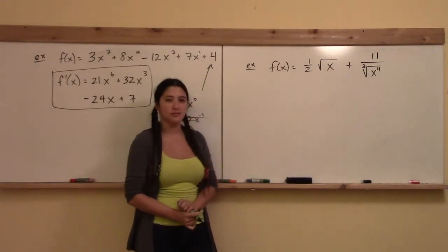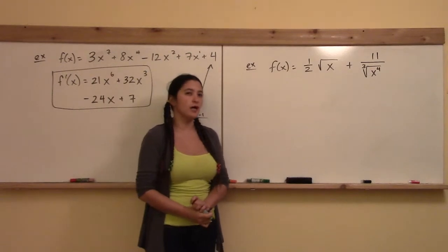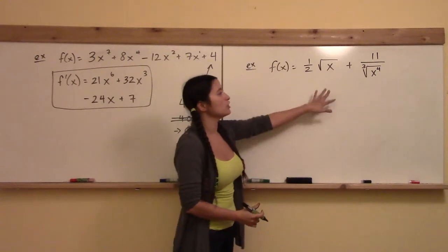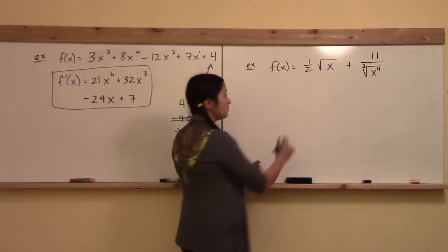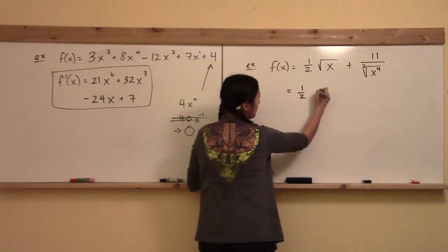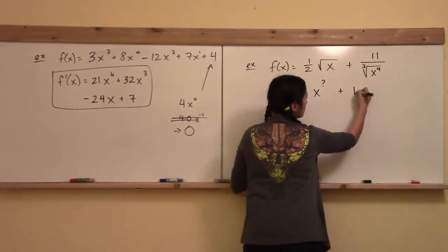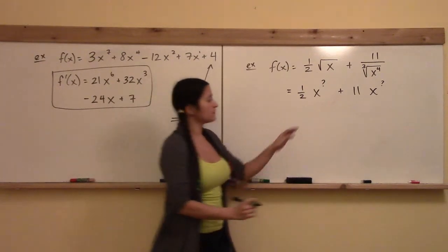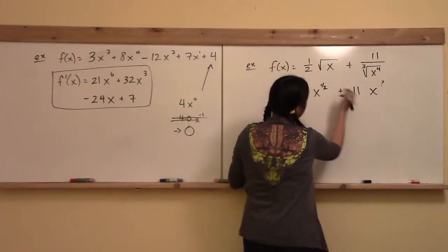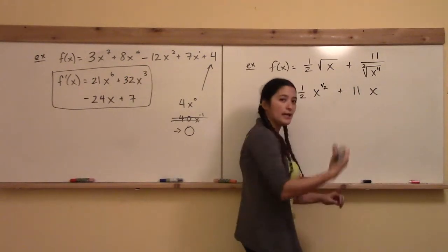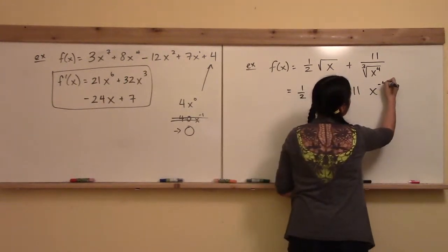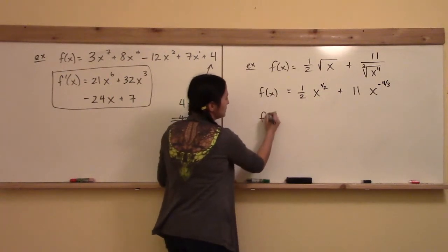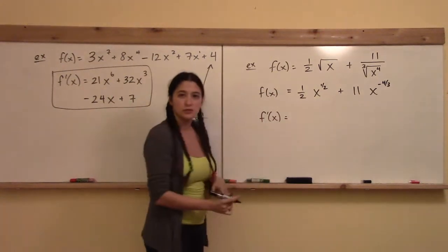I want you to take the derivative of this function, and before you start using the rules, I highly recommend that you take these fractional, possibly negative powers and rewrite each term as x to a power. To help you out, this is 1/2 times x to the [1/2] plus 11 on top times x to the [fill in the blanks]. The square root of x equals x^(1/2), and the cube root of x⁴ is on the bottom, so that means this is to the minus 4/3. Now this is the form of f(x) that I wish to look at before I take the derivative. Now I'll start to use all my rules and take the derivative.